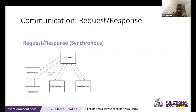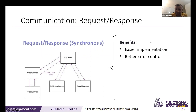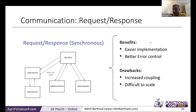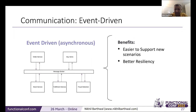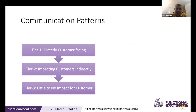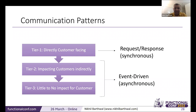There are two communication patterns. Request-response is the most common — simpler implementation, better error control, but it increases coupling and is difficult to scale. The standard Kafka message broker has its own advantages as an asynchronous approach. Typically you break services into tiers — customer-facing ones almost always use request-response, because customers expect acknowledgement when they place an order. The backend internal services would be event-driven.